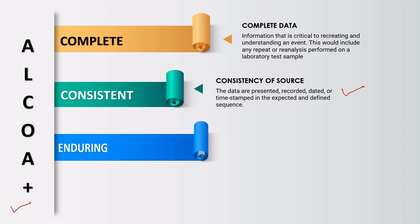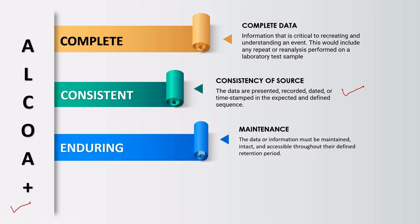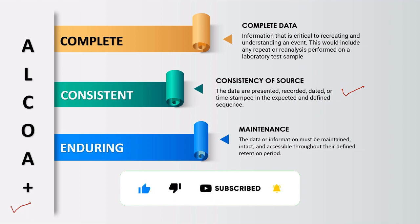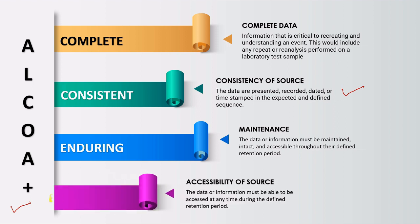The next ALCOA Plus principle is Enduring — data must be stored safely long after a trial has been completed, and must be accessible within the defined retention period. For example, if a particular trial is completed, the archived data must be maintained for 10 or 15 years and remain easily accessible throughout that clinical trial retention period.